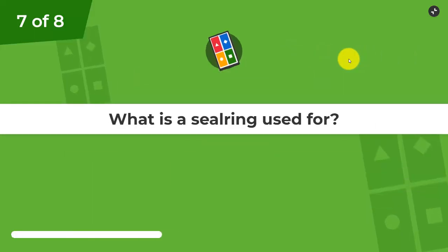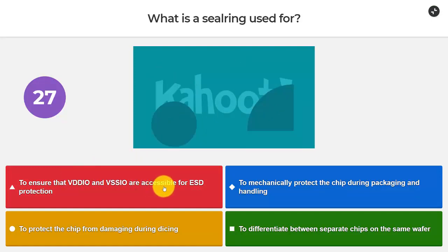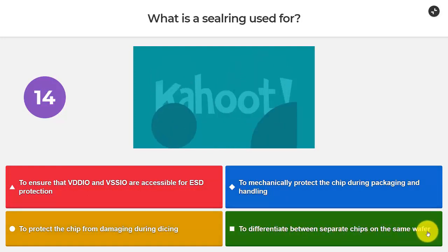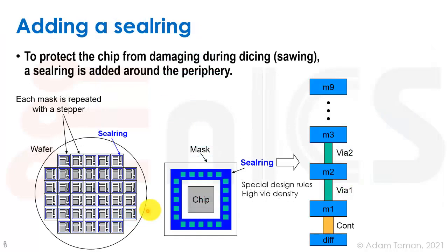Question number seven: what is a seal ring used for? To ensure VDD_IO and VSS_IO are accessible for ESD protection, to mechanically protect the chip during packaging and handling, to protect the chip from damage during dicing, or to differentiate between separate chips on the same wafer? I think it's going to be to protect the chip from damage during dicing.